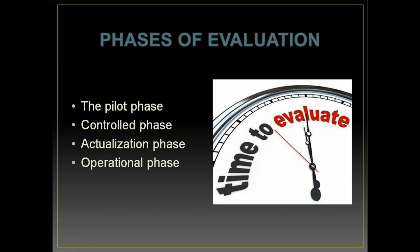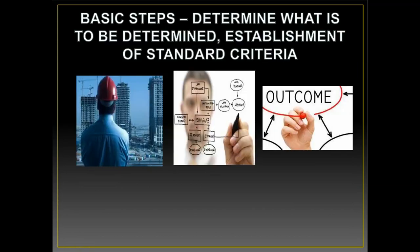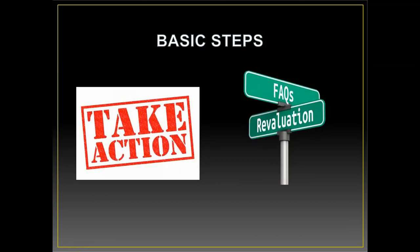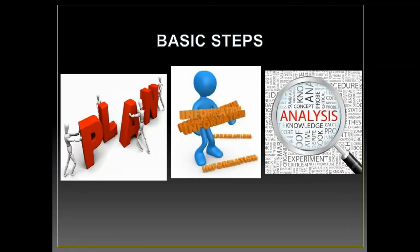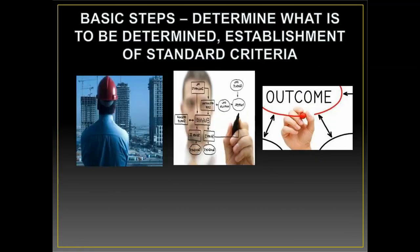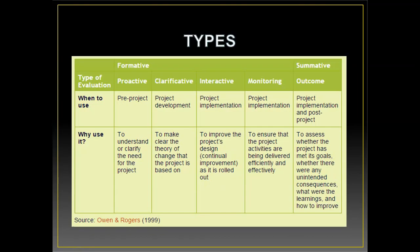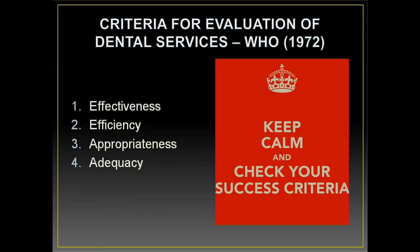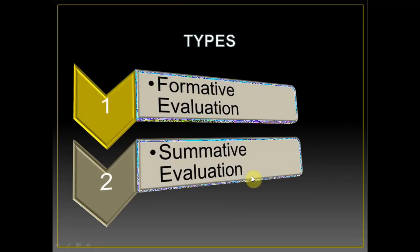To summarize, we covered the phases of evaluation, elements of evaluation, and basic steps such as determining what is to be evaluated and establishing standard criteria. This topic is most commonly asked as a short-note question worth three to four marks. You need to write the definition, the main types — formative and summative — the elements, phases, and WHO criteria for evaluation. Formative and summative evaluation may also be asked separately as long-answer questions.